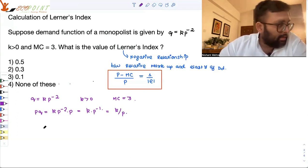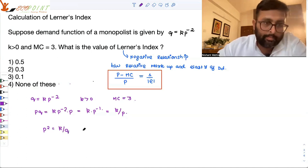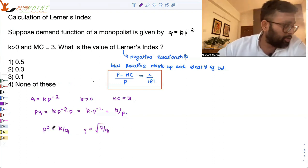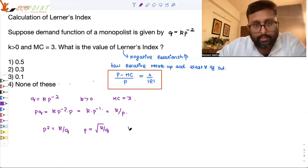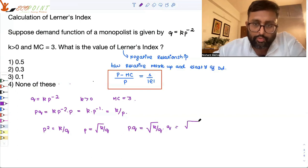So basically, from here you have p square equals to k by q. From my demand function p is equal to root of k by q. pq is root of k by q, this is p into q. So that thing will come out to be root of kq.